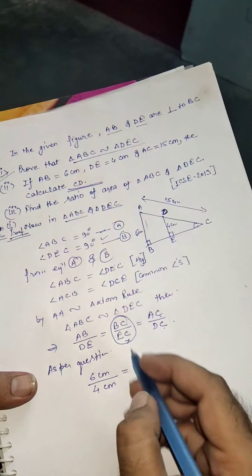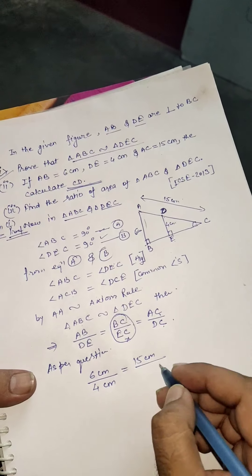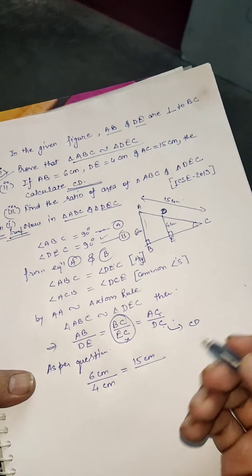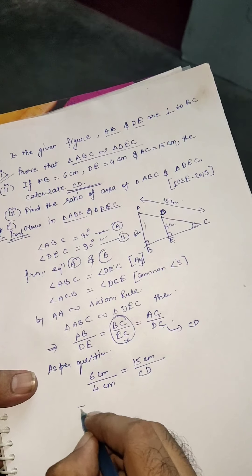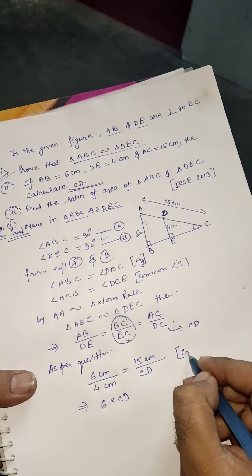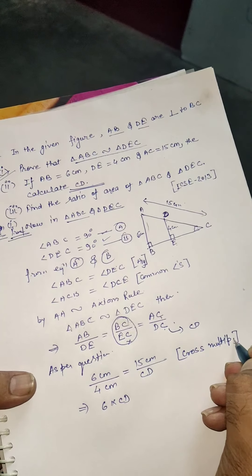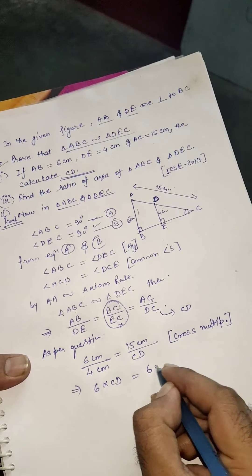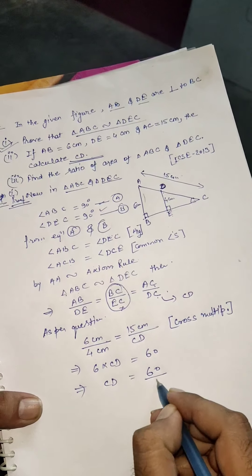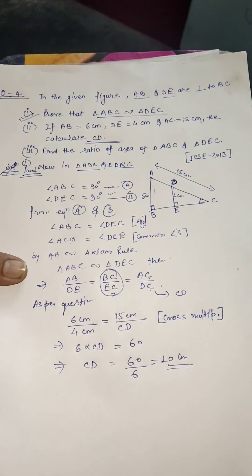AC is given as 15 centimeters, and we need to find CD. So we have 6/4 = 15/CD. Using cross multiplication: 6 × CD = 15 × 4 = 60. Therefore, CD = 60/6 = 10 centimeters.